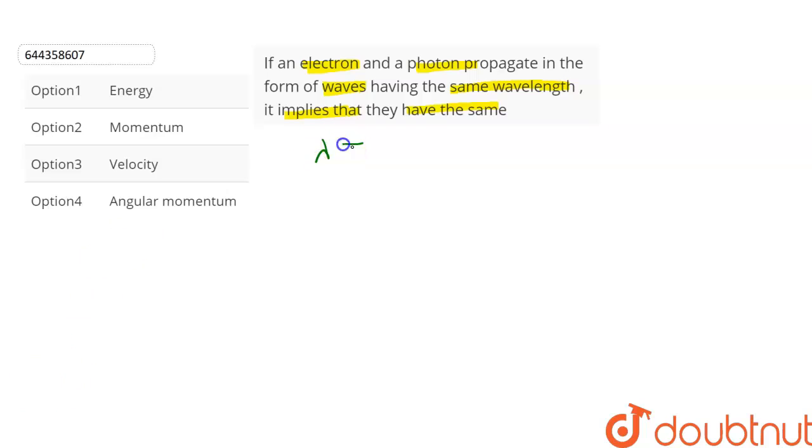The wavelength is given by lambda equals h upon p, where h is Planck's constant and p is the momentum.